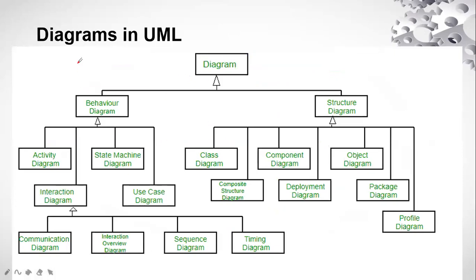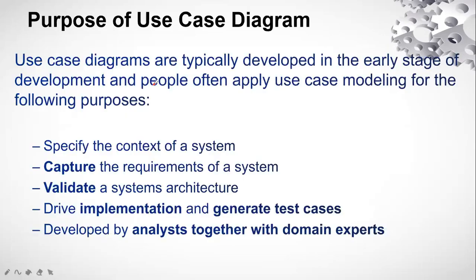The use case diagram falls under the category of behavioral diagrams, which are dynamic diagrams — as opposed to structural diagrams, which are static. This distinction between behavioral (dynamic) and structural (static) diagrams applies across the broad classification of UML diagrams. Use case diagrams are under the behavioral category, and the purposes of use case diagrams are similar to those of use cases, except the concepts are expressed through visual representation.